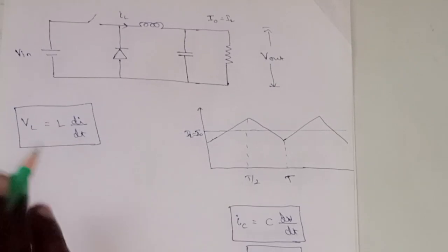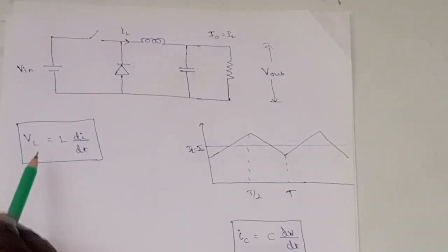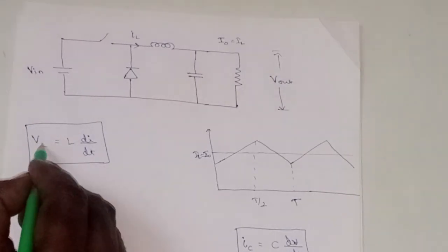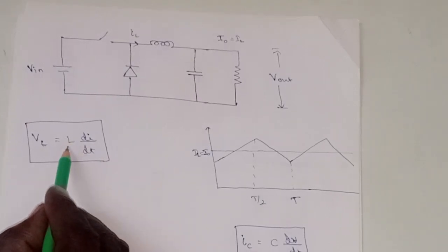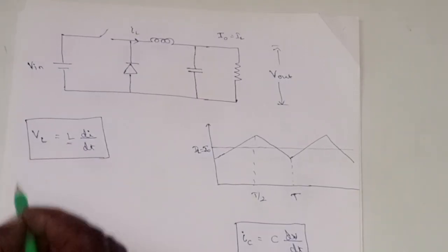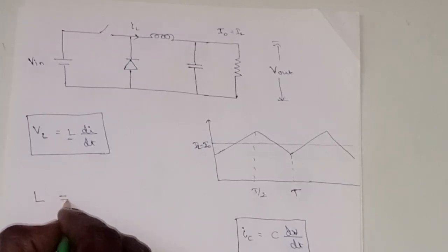But come to this point: how to find the inductor value for the Buck method. So this is the formula - voltage across the inductor is equal to L into di by dt. We need to know the value of L. So let us move this formula here, rearranging the formula here.